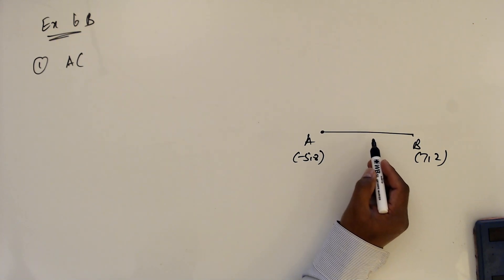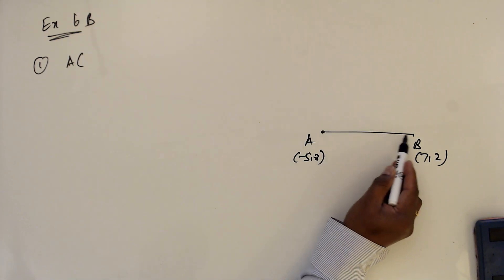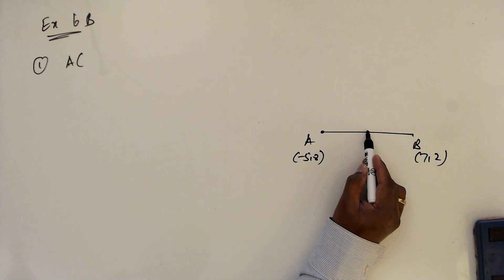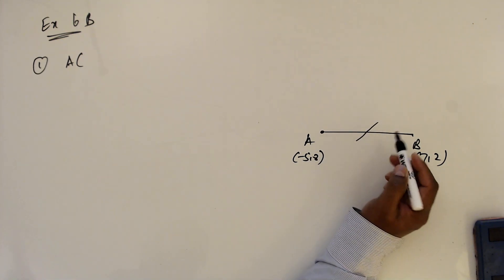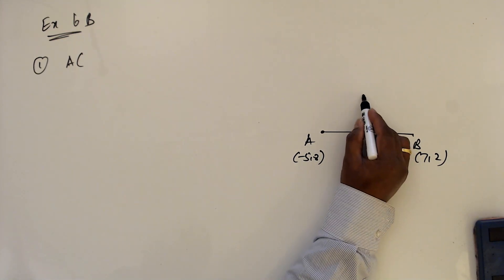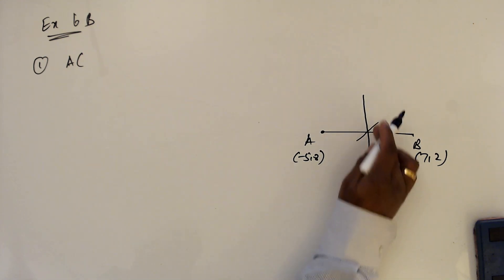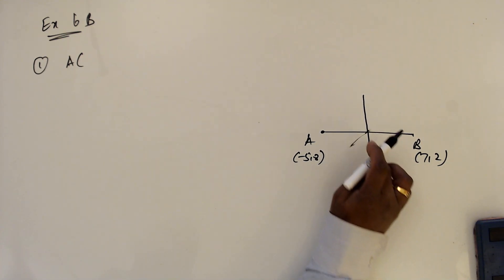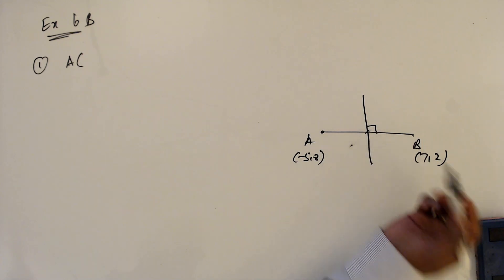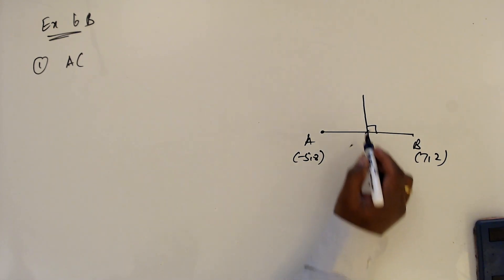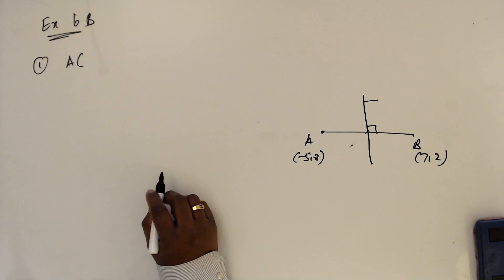Now, bisector — the middle is somewhere here. So this is a bisector, but it has to be perpendicular, not just any bisector. So this is now 90 degrees. I want to find the equation of this line.